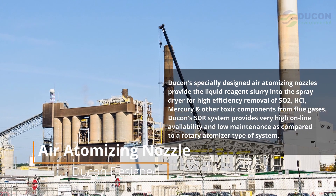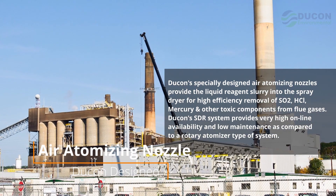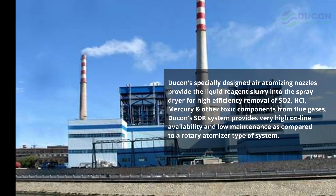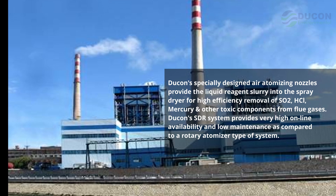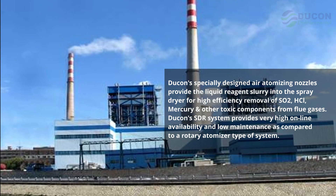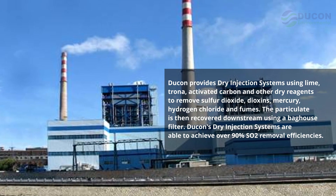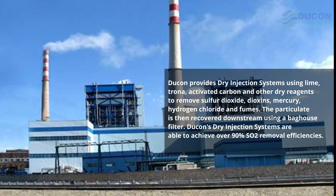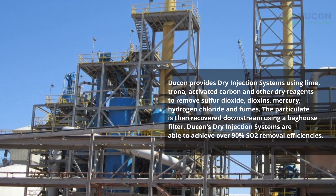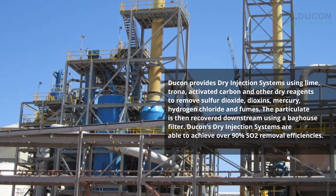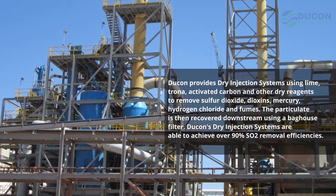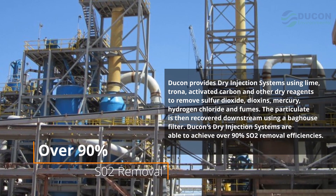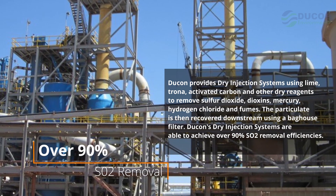Dukon's SDR system provides high efficiency removal of SO2, HCl, mercury, and other toxic components from flue gases, with very high online availability and low maintenance compared to a rotary atomizer type system. Dukon also provides dry injection systems using lime, Trona, activated carbon, and other dry reagents to remove sulfur dioxide, dioxins, mercury, hydrogen chloride, and fumes. The particulate is then recovered downstream using a baghouse filter, achieving over 90% SO2 removal efficiency.